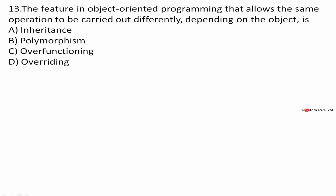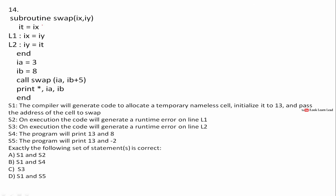The feature in object-oriented programming that allows the same operation to be carried out differently depending on the object is polymorphism. That is the answer.